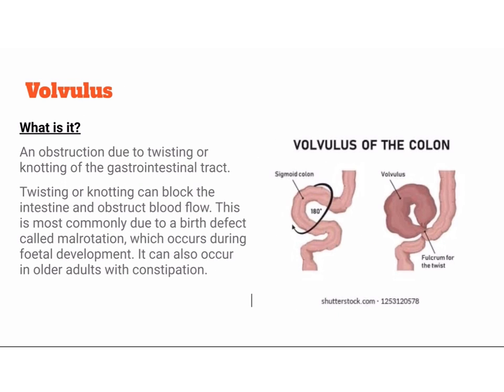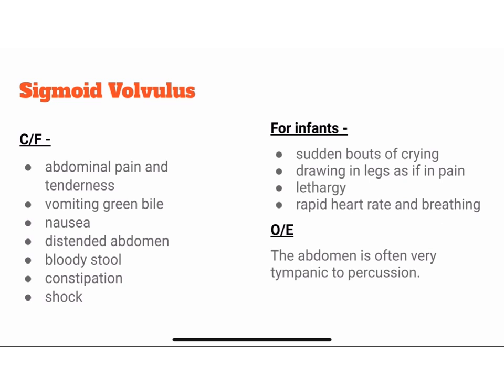Volvulus is an obstruction due to twisting or knotting of the GI tract. Twisting or knotting can block the intestine and obstruct blood flow. This is most commonly due to a birth defect called malrotation, which occurs during fetal development. It can also occur in older adults with constipation.